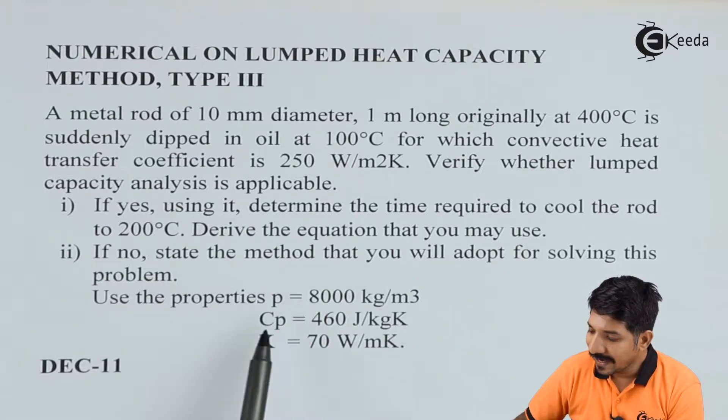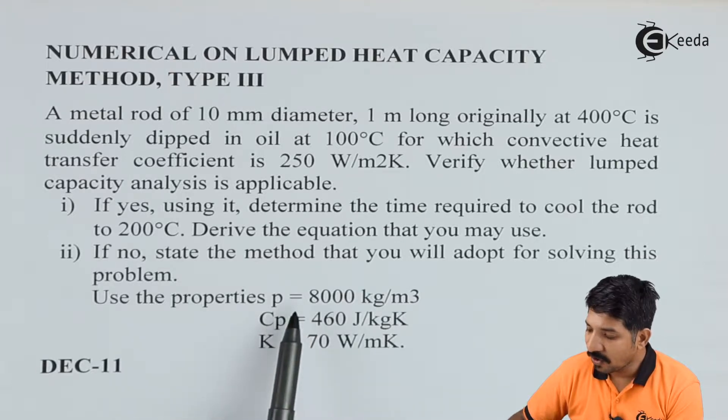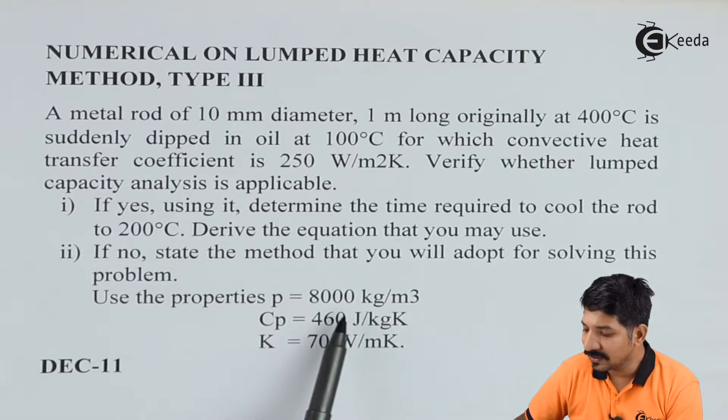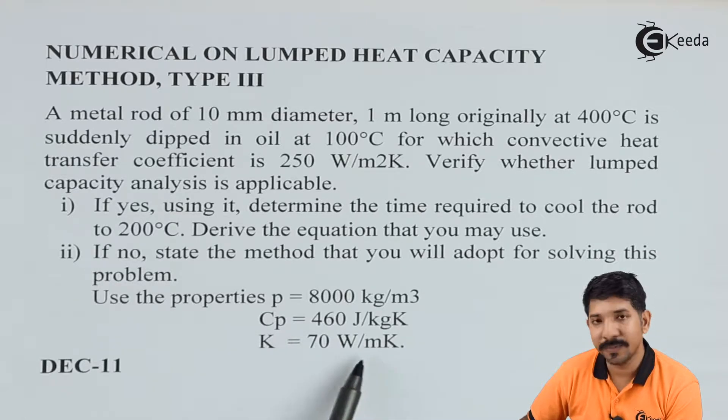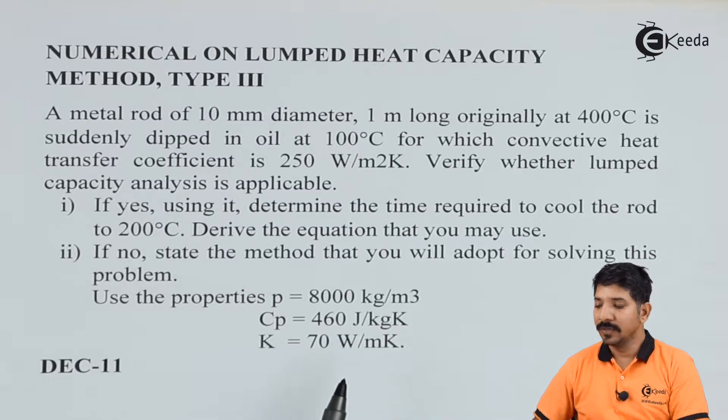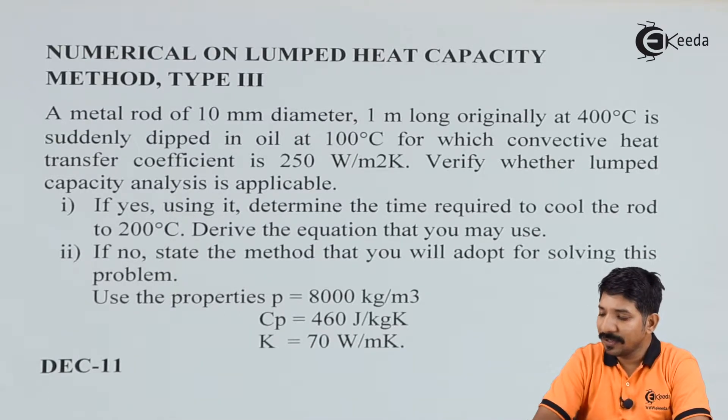They have given us that the density of the oil as 8000 kg per meter cube, the value of CP is 460 joule per kg Kelvin, and the value of K is 70 Watt per meter Kelvin.